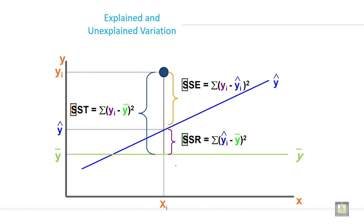And here is explained and unexplained variation on the graph. This is total variation because this is expected and actual.